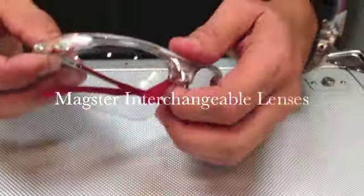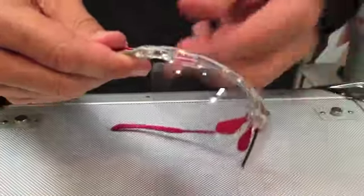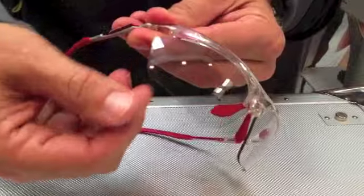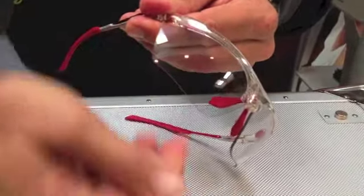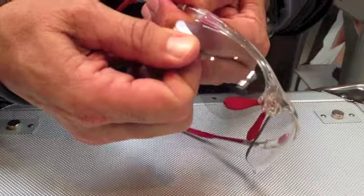Welcome to the Rudi Project. Today we're going to teach you all the features and benefits about the Rudi Project Magster model. The Magster has interchangeable lenses. Simply pinch the bottom of the lens here, hang on to the top part of the frame, and pull towards the center.